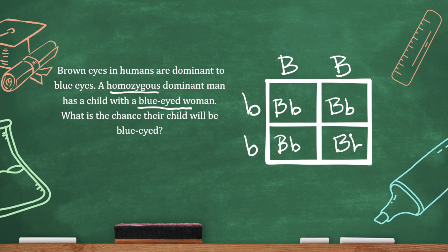It's 100% big B, little b. All of those are brown-eyed because they all have one dominant allele, and when that dominant allele is present, that's what's going to be expressed. So what is the chance their child will be blue-eyed? 0%.